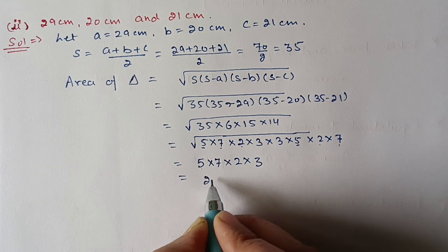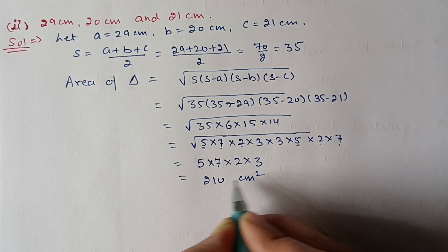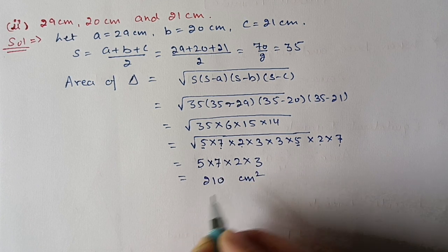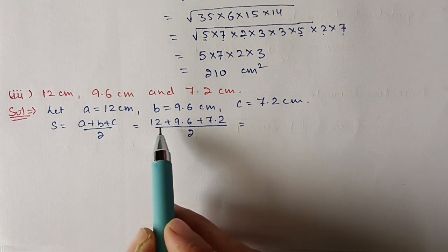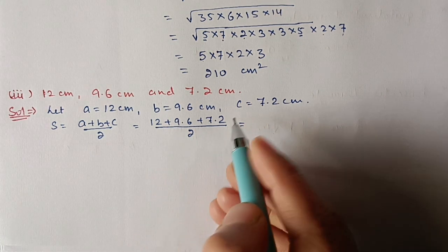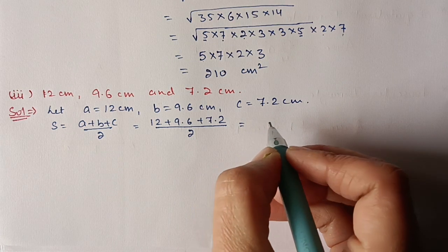The answer is 210 cm². Next, the third part of question two: sides are 12 cm, 9.6 cm, and 7.2 cm. First, find the semi-perimeter: s = (12 + 9.6 + 7.2)/2 = 28.8/2 = 14.4.